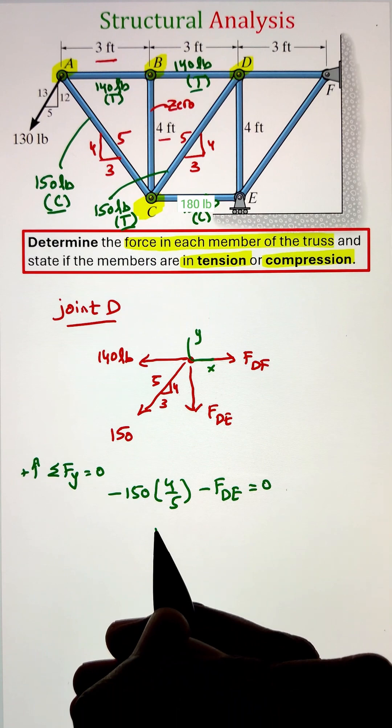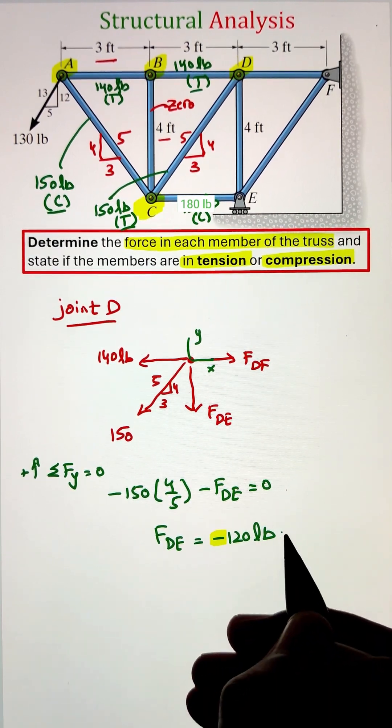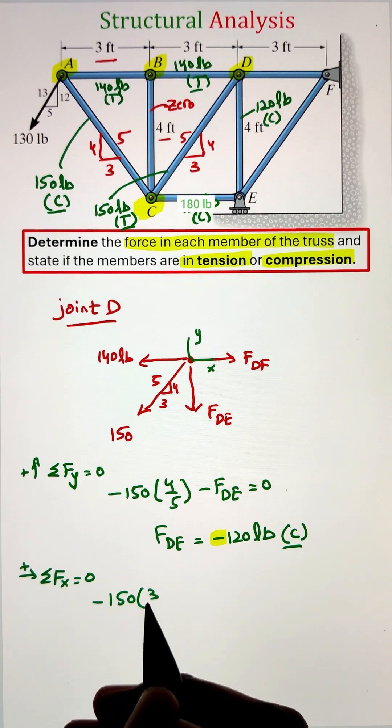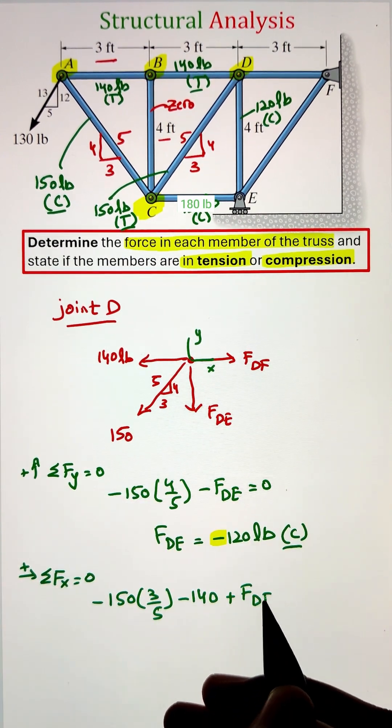Simplifying, we are getting the value of FDE as negative 120 pounds, meaning that the member is in compression, whereas member DF is in tension having 230 pounds.